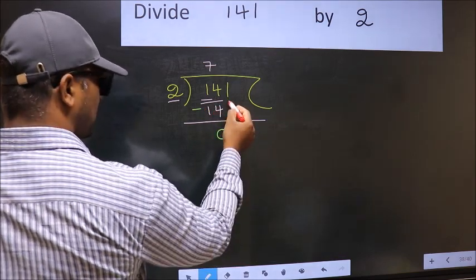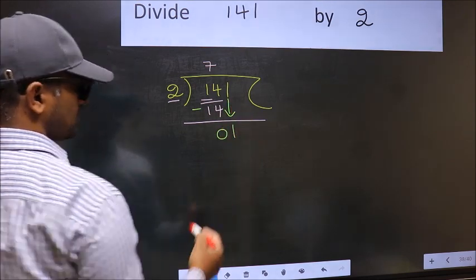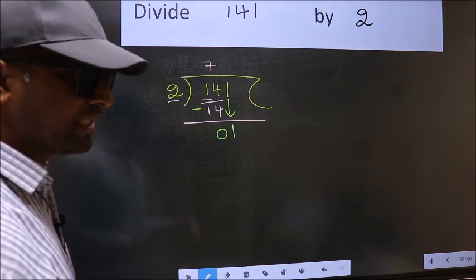Next, bring down the beside number. So, 1 down. After this step, the mistake happens.